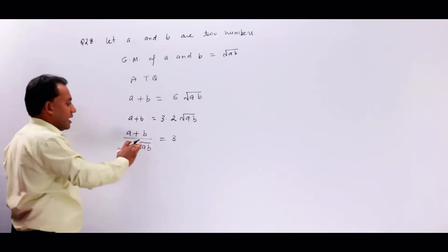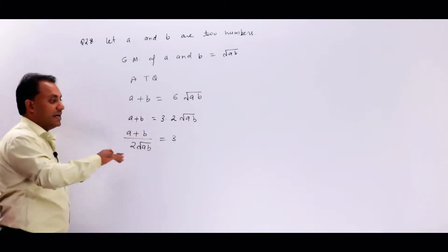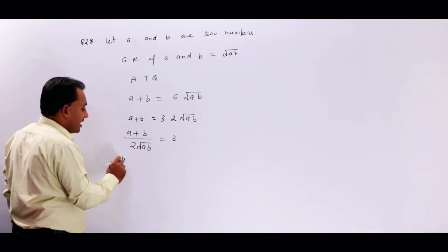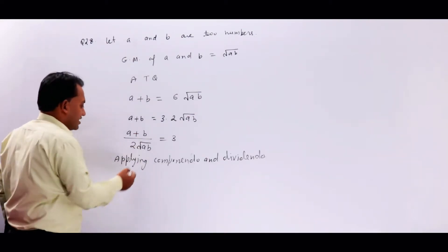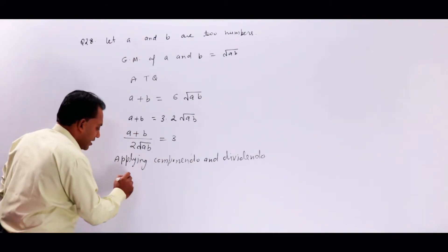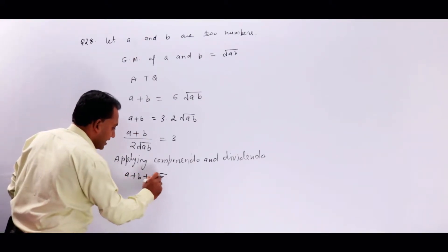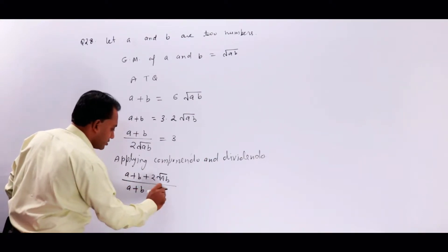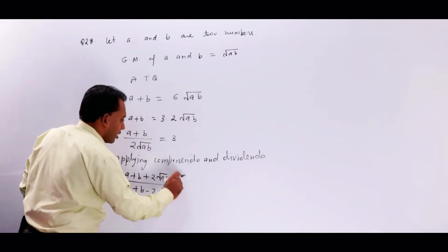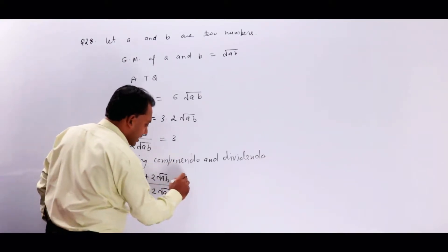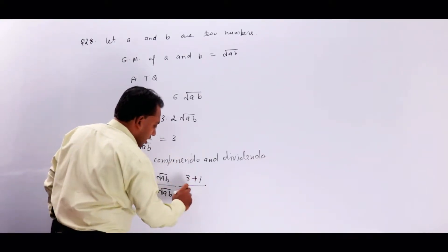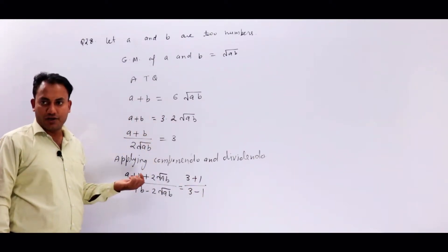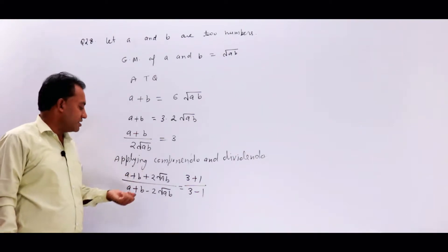अब आप apply करेंगे componendo and dividendo rule। Applying componendo and dividendo, तो यह कुछ ऐसा हो जाएगा: (A + B + 2√AB) upon (A + B − 2√AB) = (3 + 1) upon (3 − 1)।